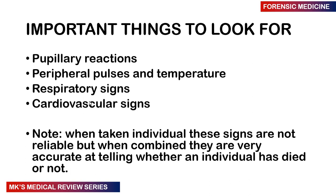You can also palpate the distal pulses in the lower limbs — the dorsalis pedis, the posterior tibial, the popliteal — and the carotid arteries as well. So I palpate all peripheral pulses and central pulses to see if they are present. In someone in severe shock, you may still not be able to feel peripheral pulses and sometimes even the central pulses are weak.